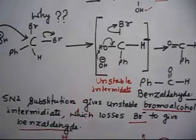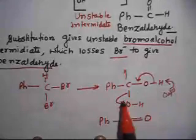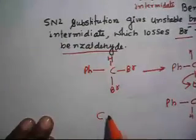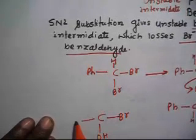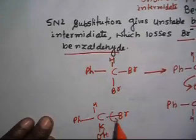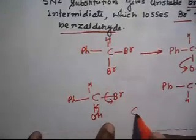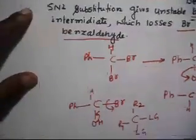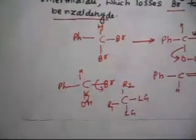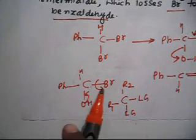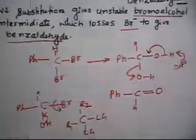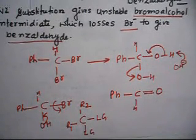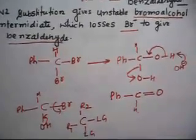Whenever you have two leaving groups on the same carbon — such as Br and OH, or two OH groups, or any two good leaving groups R1 and R2 — you must remove one leaving group by eliminating a small molecule. In this case you remove HBr; in other cases you remove H2O, and sometimes N2. This is the key point to remember. Let us do one more related problem.